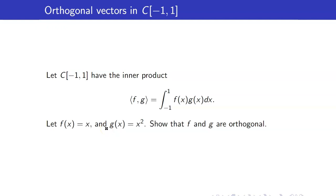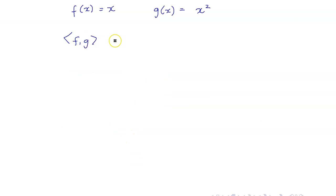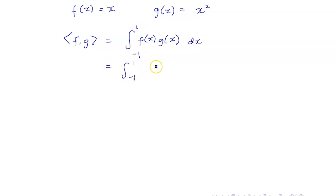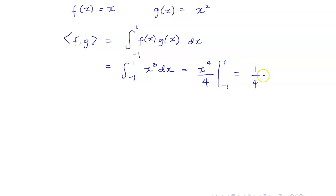Let us recall again the inner product on the set of continuous functions from negative 1 to 1, and let us show that these two functions are orthogonal. Let us compute their inner product. This is equal to the integral of f(x) times g(x) from negative 1 to 1. f(x) times g(x) is x cubed, so this is equal to x to the fourth over 4 from negative 1 to 1, which equals one-fourth minus one-fourth, and this is really equal to 0.